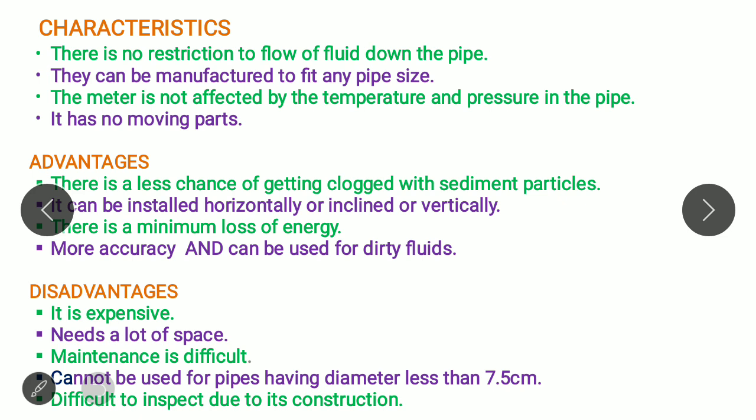The advantage is there is less chance of getting clogged with sedimented particles because the diameter of the pipe is quite large. Moreover, it can be installed horizontally or inclined or vertically and there is minimum loss of energy because there is slow tapering, slow convergence, slow divergence. The loss in energy is minimum. This is the major difference between the Venturi and Orifice meter. It is more accurate and can be used for dirty fluids because there is no clogging.